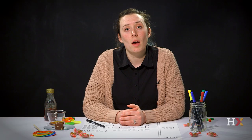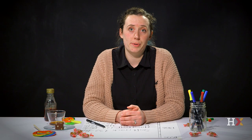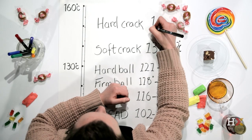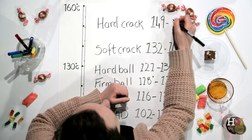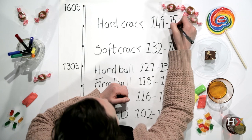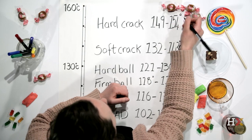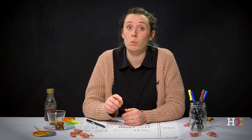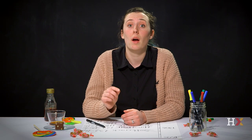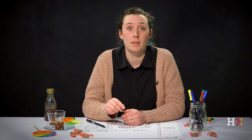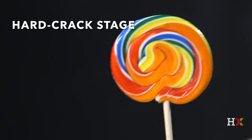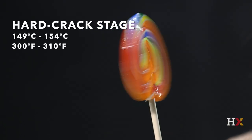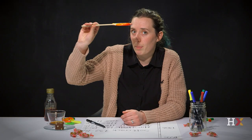At 149 to 154 degrees Celsius, we reach the hard crack stage. This stage contains the highest concentration of sugar at 99%. Dropping this mixture into cold water will create hard, brittle strands that break when bent. This stage produces hard candies such as the lollipop.